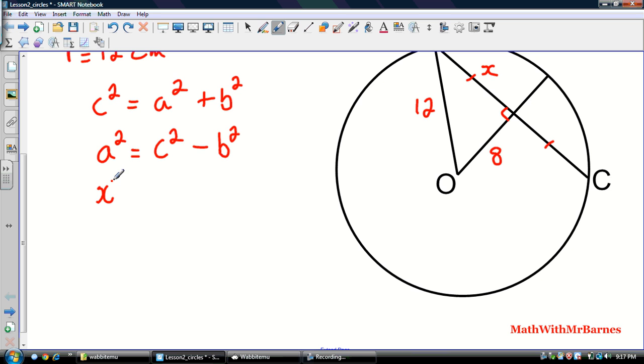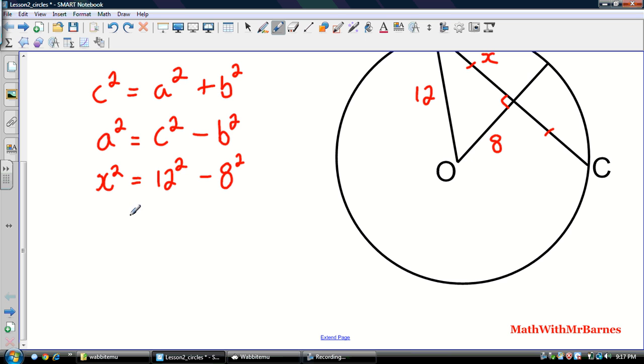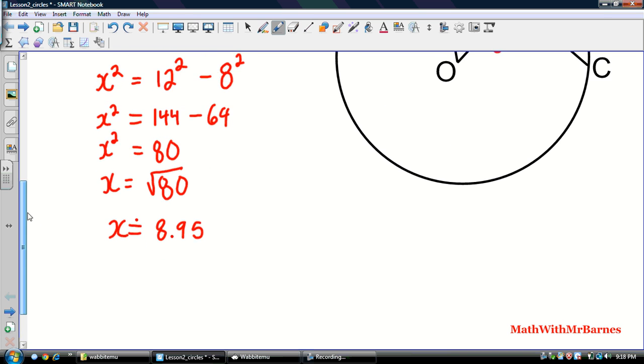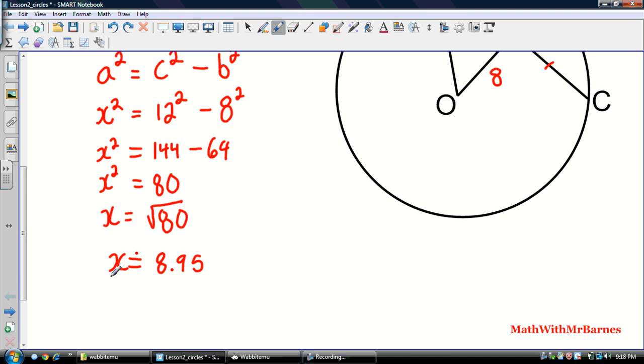So now let's fill in some blanks here. So a is just x. And c is 12. And b is 8 squared. So we're left with 12 squared is 144, and 8 squared is 64. So that's x². And then 144 minus 64 is just 80. And then we can take the square root of both sides to get rid of the x². So x is equal to the square root of 80. And I'm just going to approximate 80. It's not a perfect square. So x is about 8.95 centimeters. That sounds good to me.